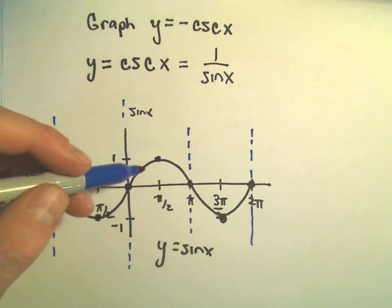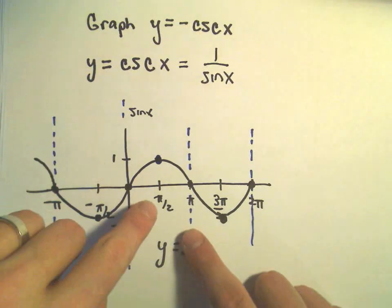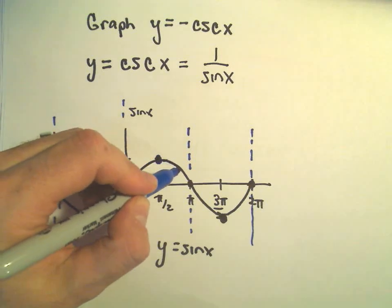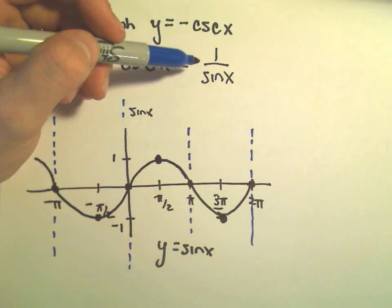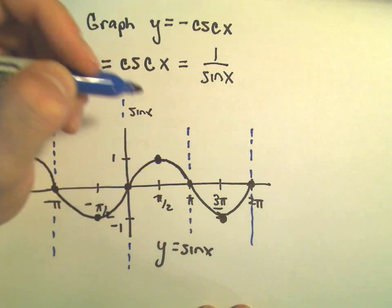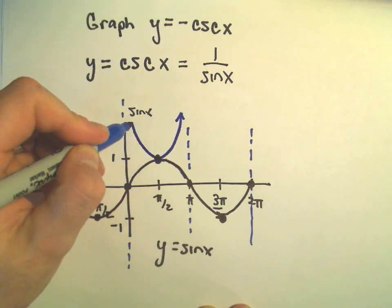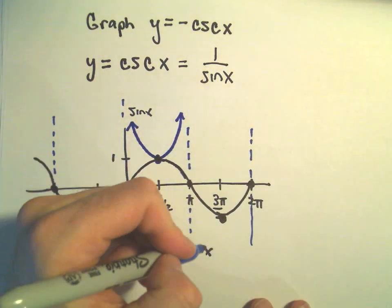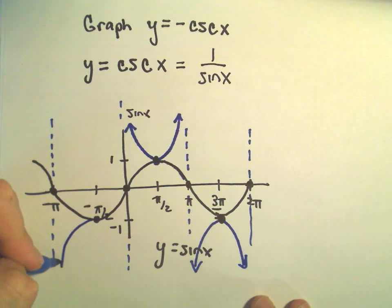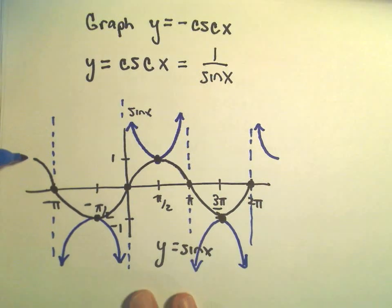Now you can plot points. Cosecant of pi over 2 gives you 1 over 1, so they both go through 1. Notice as you go from x equals pi over 2 to x equals pi, the sine is getting smaller and smaller, closer to 0. If you take 1 and divide by a number getting closer to 0, you get bigger and bigger numbers. So cosecant of x comes off the top of this function, and it's trapped between these vertical asymptotes. Here it would come off the bottom.